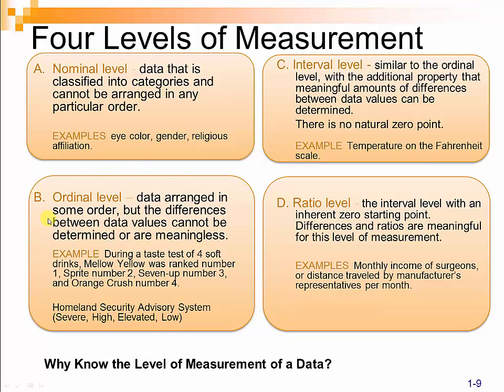The next level is the ordinal level. At this level, data is arranged in some order, but the differences between data values cannot be determined or they may be meaningless. For example, one ice cream flavor might be rated best, another second best, and another third — but there isn't a distinct quantifiable difference between first and second place. The Homeland Security Advisory System is also ordinal: there is a difference between severe, high, elevated, and low, but the differences between those levels are not equal or clearly defined.